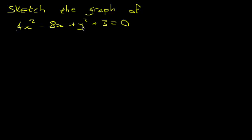So this time we're going to sketch the graph 4x squared minus 8x plus y squared plus 3 is 0. Now this is in a slightly less conventional form, usually you'll be asked to sketch something of the form y is f of x, right, y will be on its own, but this is also possible.